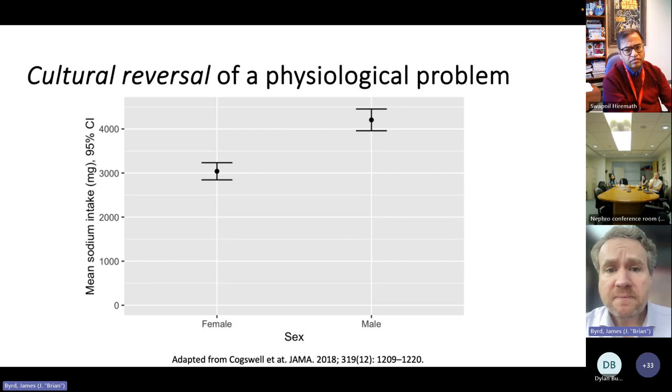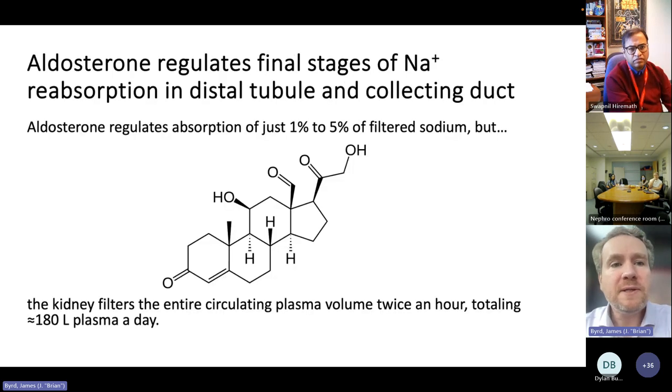When we think about modern aldosterone physiology, the problem of having to retain sodium in the body has been fixed. Boy, did we fix that. We get lots and lots of sodium in our diet. If you look at 24-hour urinary sodium excretion in the NHANES study, it turns out that the mean sodium intake is estimated to be more than 3,000 milligrams for females and more than 4,000 milligrams for males. Now the issue is not how can we retain enough sodium in our body, but rather can we shut off aldosterone production sufficiently to allow enough of it to escape.